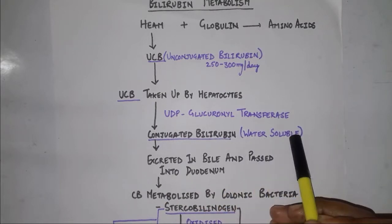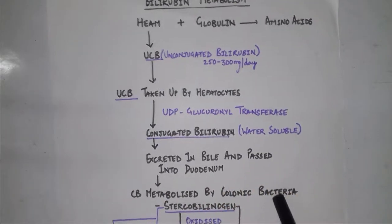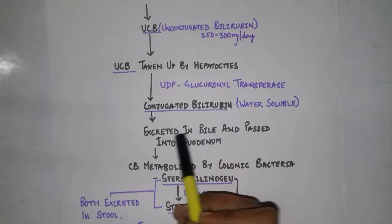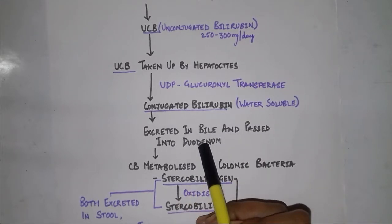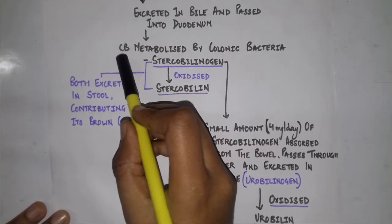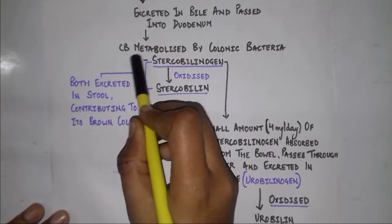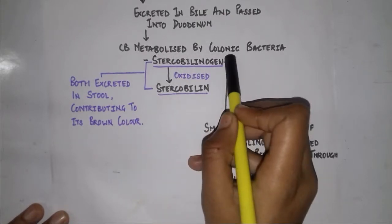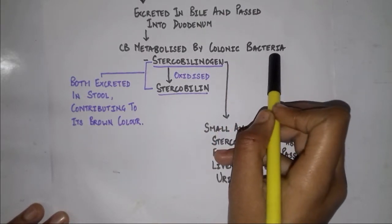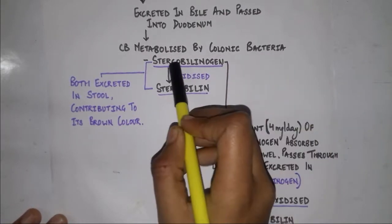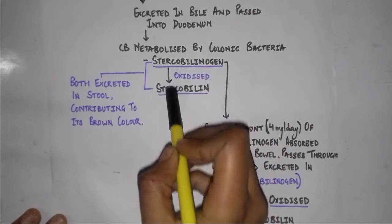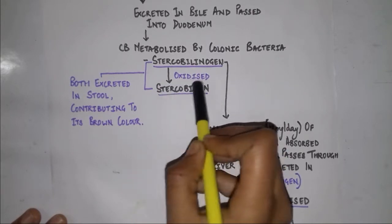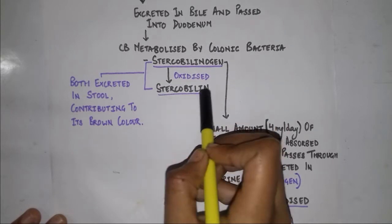Conjugated bilirubin is soluble in water. It is excreted in bile and passed into the duodenum. There, conjugated bilirubin is metabolized by colonic bacteria into stercobilinogen, which is further oxidized into stercobilin.